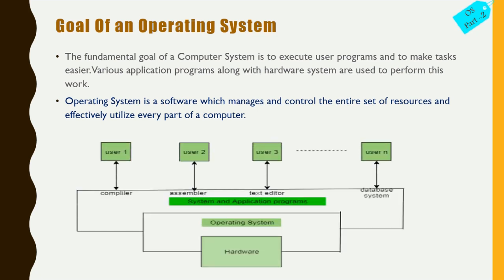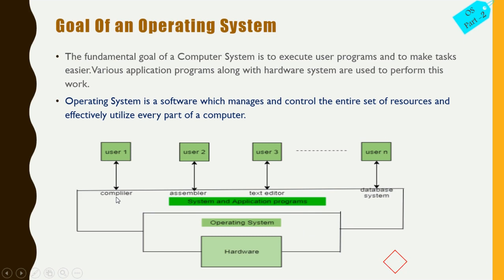The operating system is software that manages and controls the entire set of resources and effectively utilizes every part of a computer. In this figure, you can see the computer system — that is the hardware — and over the hardware the operating system is installed. Over the operating system, various other applications are installed, including compiler, assembler, text editor, and database, and these are used by different users.